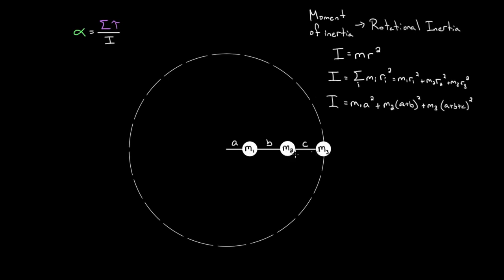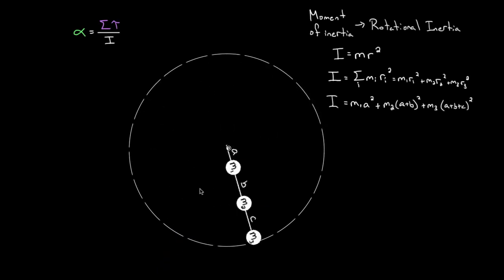So how can we make this three-mass system easier to rotate? One thing you can always do is take your masses and move them toward the axis — move these toward the center. If you do that, all of these r's get smaller. If you reduce r, you get less moment of inertia, and that object is easier to rotate and easier to angularly accelerate. You can whip this thing around easier if the mass is more toward the axis.